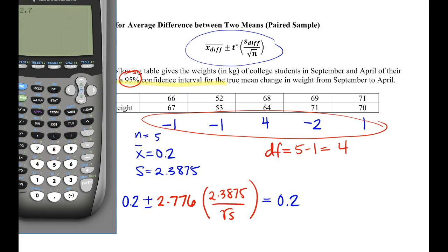Let's reboot my computer. 2.776 times 2.3875, divided by the square root of 5. So we're going to add and subtract 2.964.